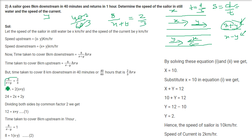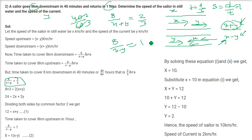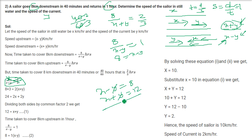The second condition: it returns in 1 hour, going upstream. The same distance of 8 km applies and X minus Y is the speed. So 8 by (X minus Y) equals 1 hour, giving X minus Y equals 8. From the first equation: 8 by (X plus Y) equals 2/3, so X plus Y equals 12. Adding both equations: 2X equals 20, X equals 10. Putting X as 10, Y equals 2. The sailor's speed in still water is 10 km/hr and the speed of the current is 2 km/hr.